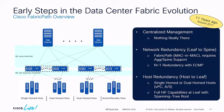Fabric Path is being sunsetted now, though we still have some deployed. It proved to be fairly popular — very simple to operate and configure. The problem was it didn't win the standards war. VXLAN won, and as a consequence we pivoted our portfolio to VXLAN.